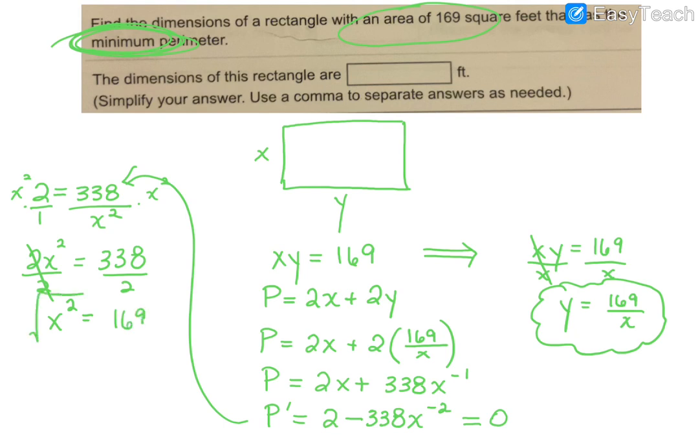And when I square root both sides, we normally consider both the positive and negative, but it really doesn't make sense to talk about a negative in this case, because we're talking about distances. And so X is equal to positive 13 would make more sense.